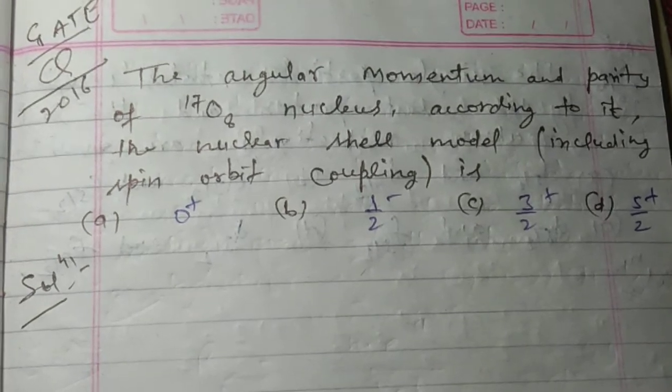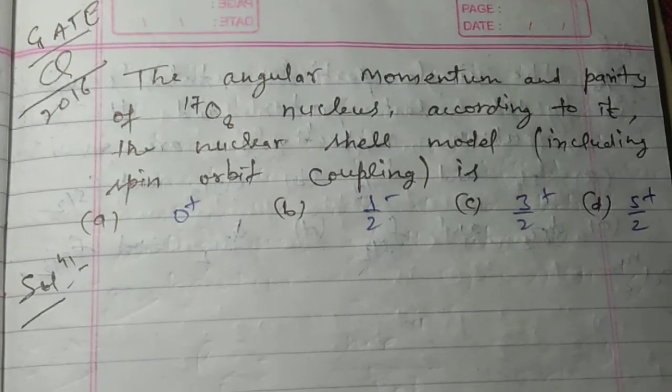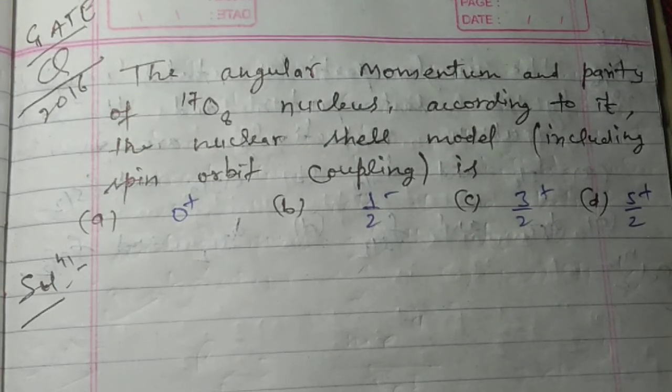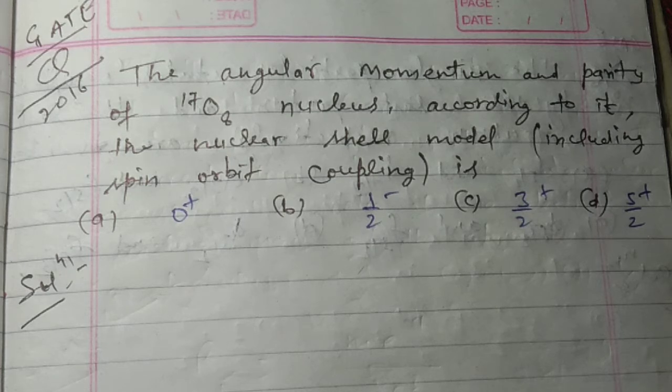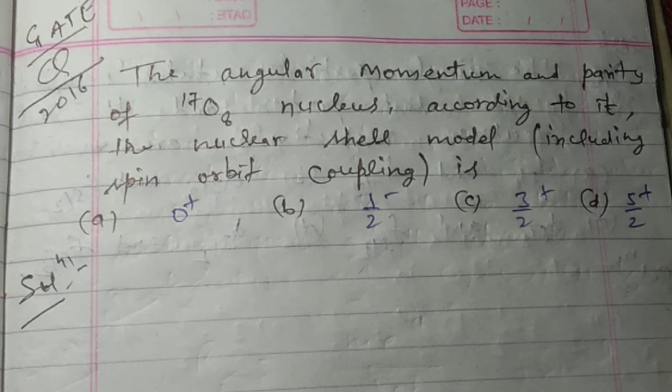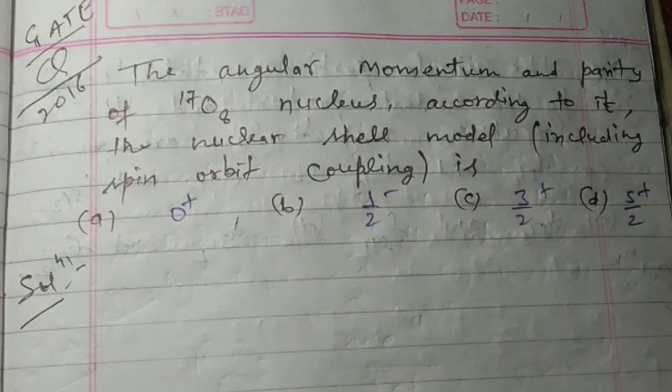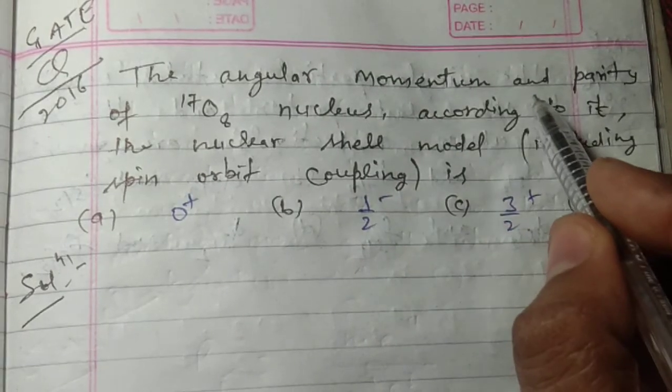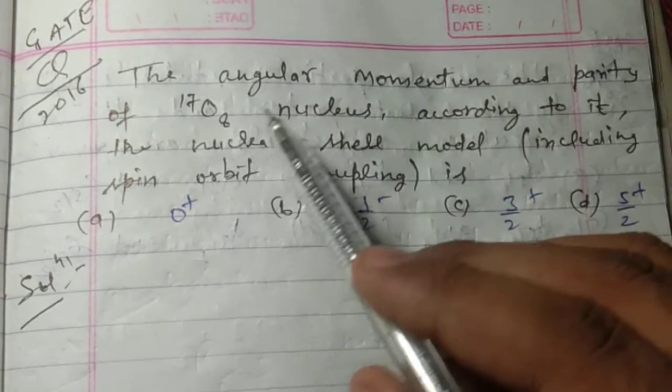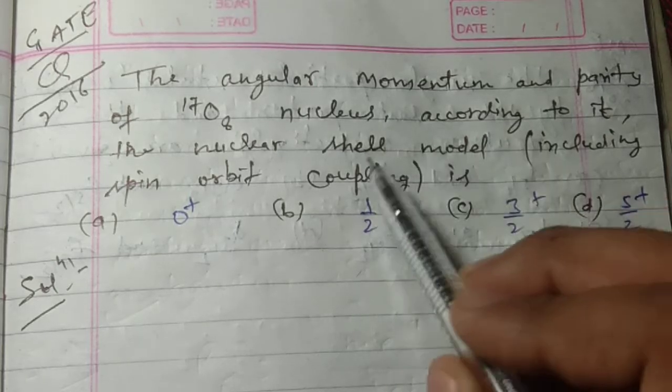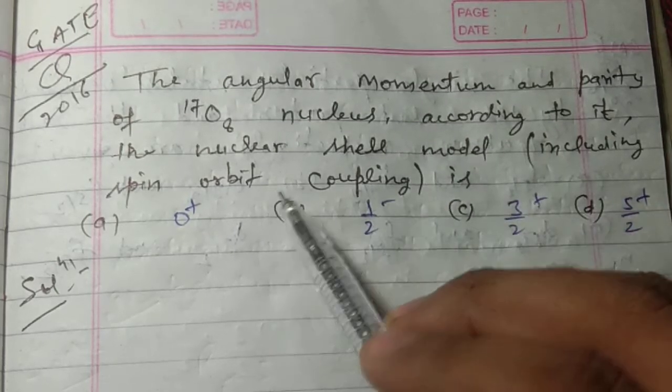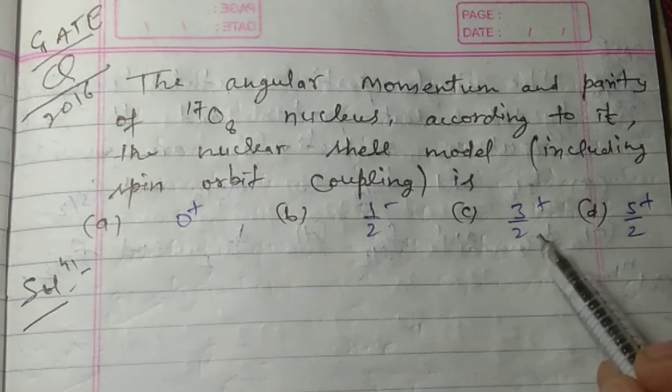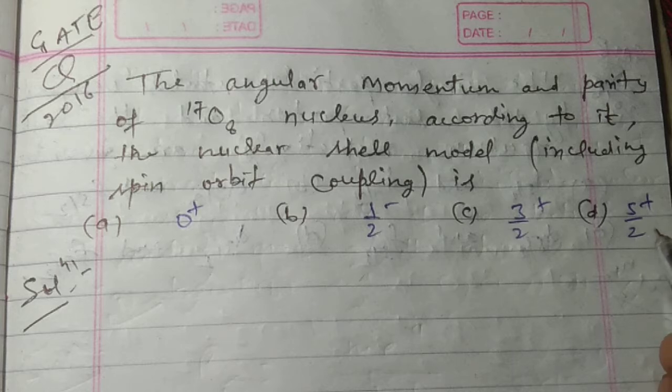Hello everyone, welcome to my channel, Learning Institute. Today I am going to discuss some problems on angular momentum and parity. This question was asked in GATE 2016. The angular momentum and parity of Oxygen-17 nucleus, according to the nuclear shell model including spin-orbit coupling, is: (a) 0+, (b) 1/2-, (c) 3/2+, or (d) 5/2+.